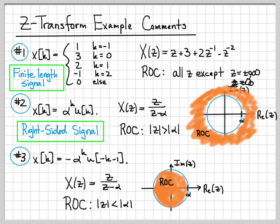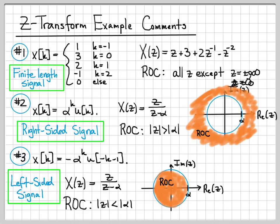And then finally, a left-sided signal is a signal that exists for negative time — it exists towards the left on the time axis. Anytime we deal with a left-sided signal, the region of convergence is inside of a circle. These are good things to know about regions of convergence. Depending on what type of signal you're dealing with, right away you'll know what the region of convergence should end up looking like.